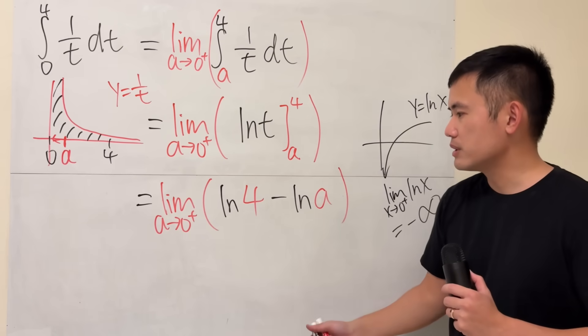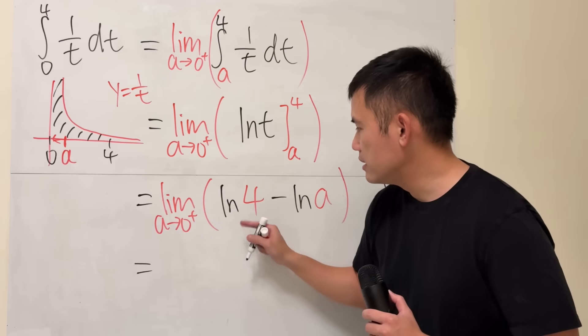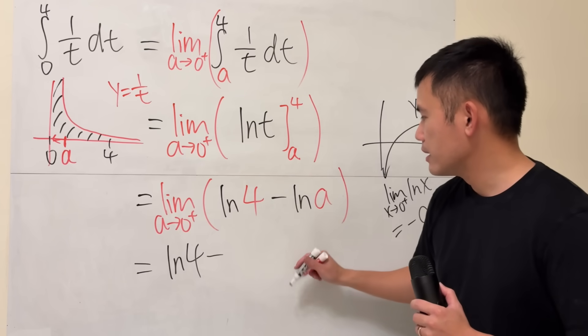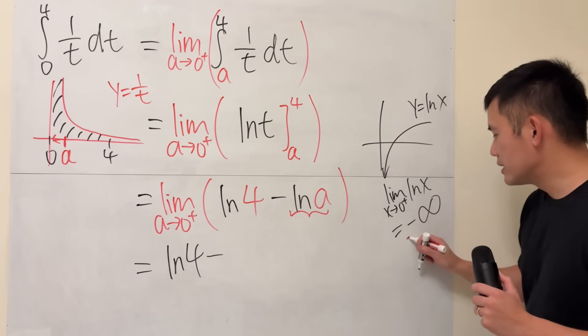Same thing for the a, of course. So what we get is, this right here is ln 4, and then the minus. But this portion is what we said, it's this.